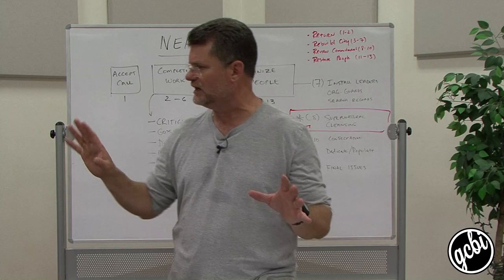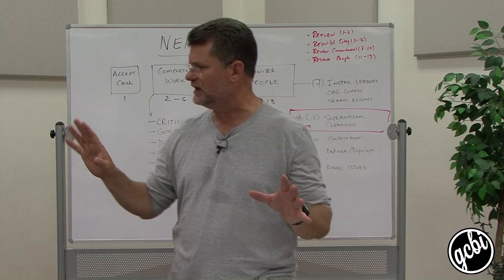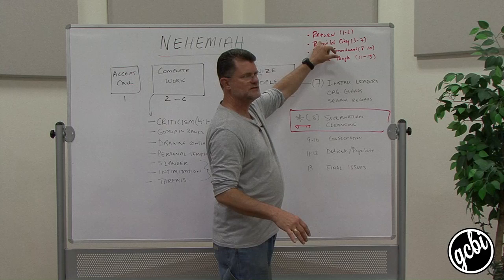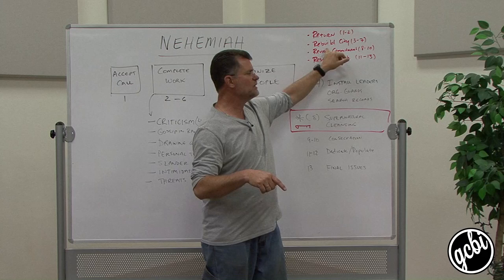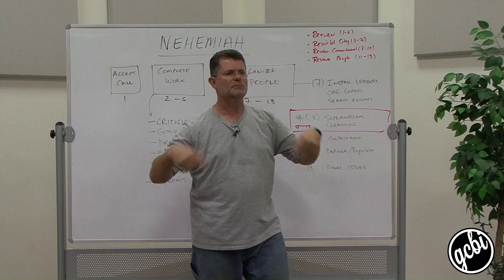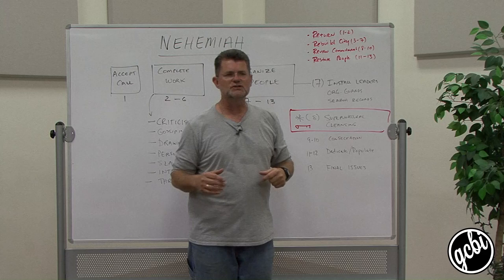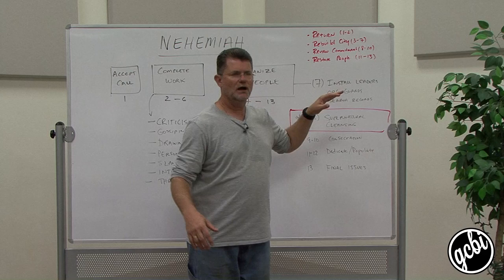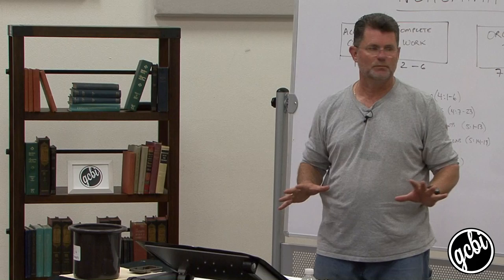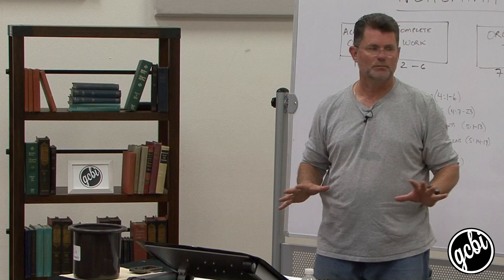There's a couple of different ways to divide the book. The way that it's divided in probably online is into four boxes, which is the return from Babylon to Jerusalem in chapters 1 and 2, the rebuilding of the city, which is chapters 3 through 7, the renewal of the commitment of the people, and then the restoration of the people in chapters 11, 12, and 13. That's the way it's done in your online boxes. I actually like something else a little better.